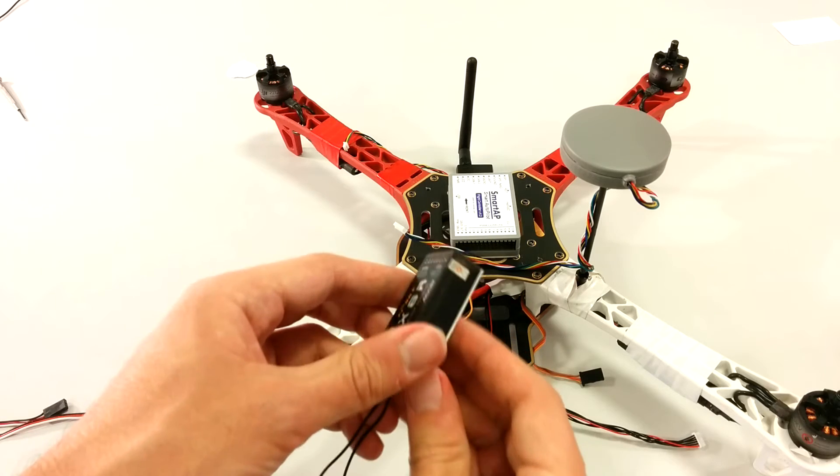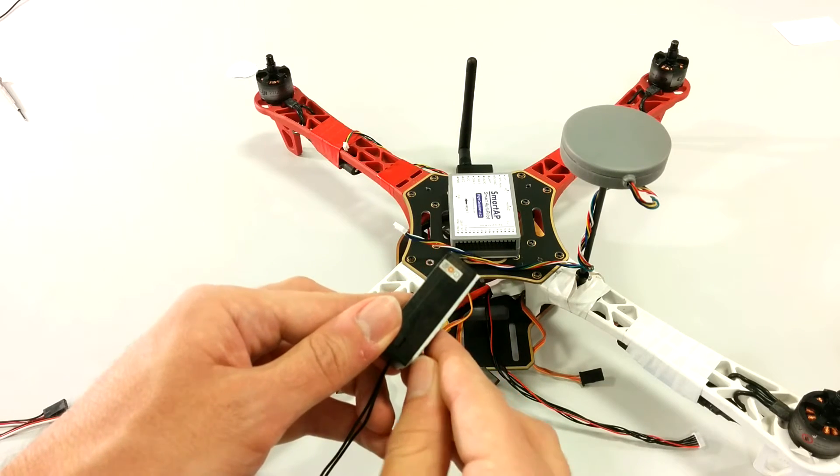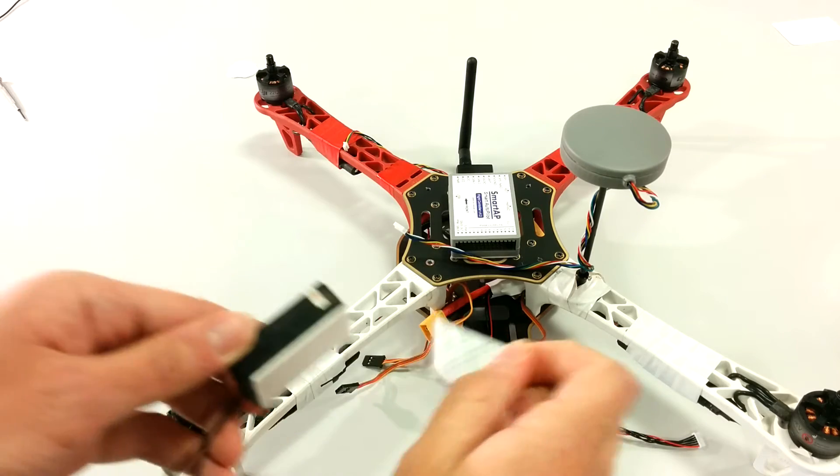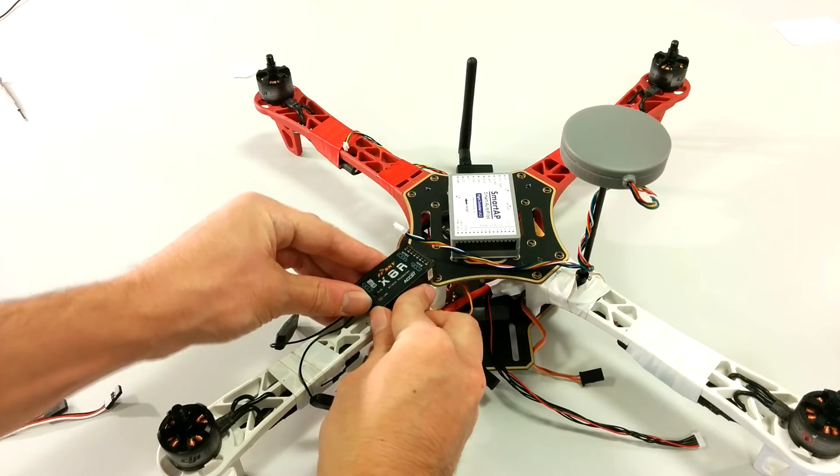RC receiver can be either SBUS or PPM. It's better to locate it near the rear left side of the autopilot. In this case, cable connection will be easier.